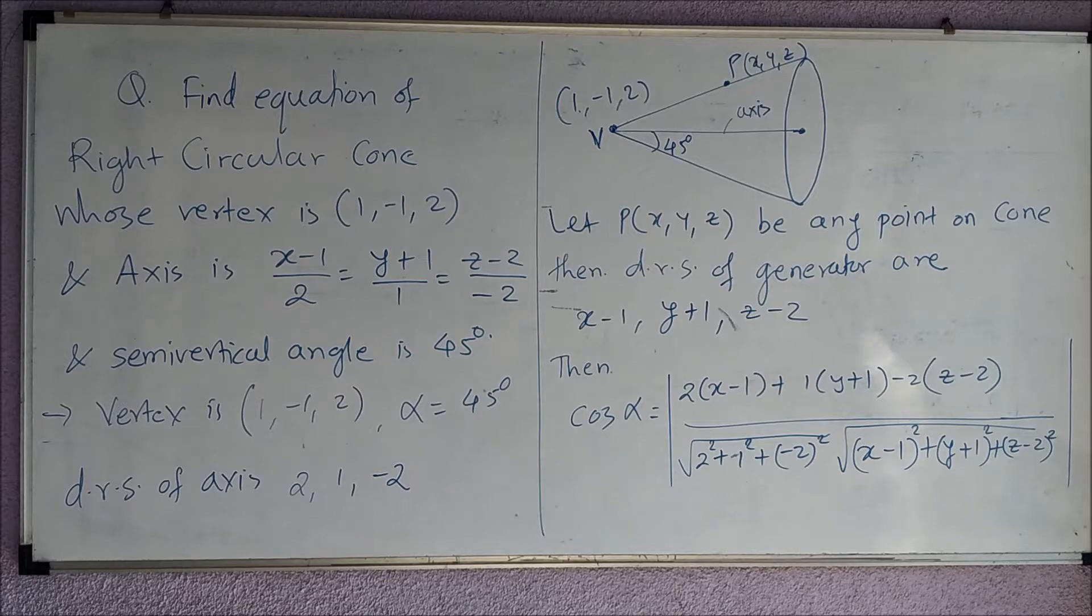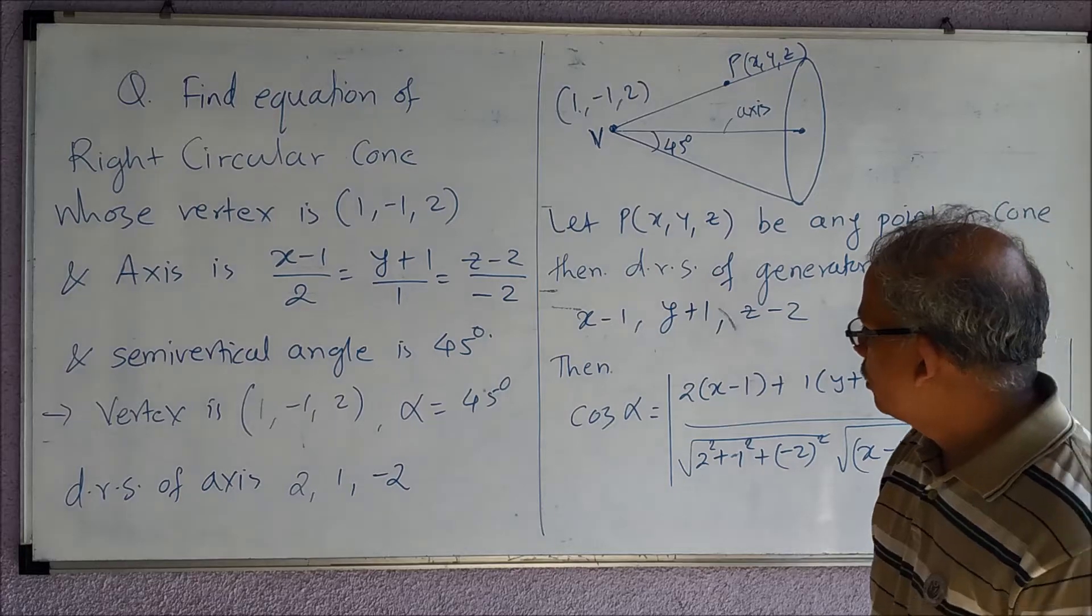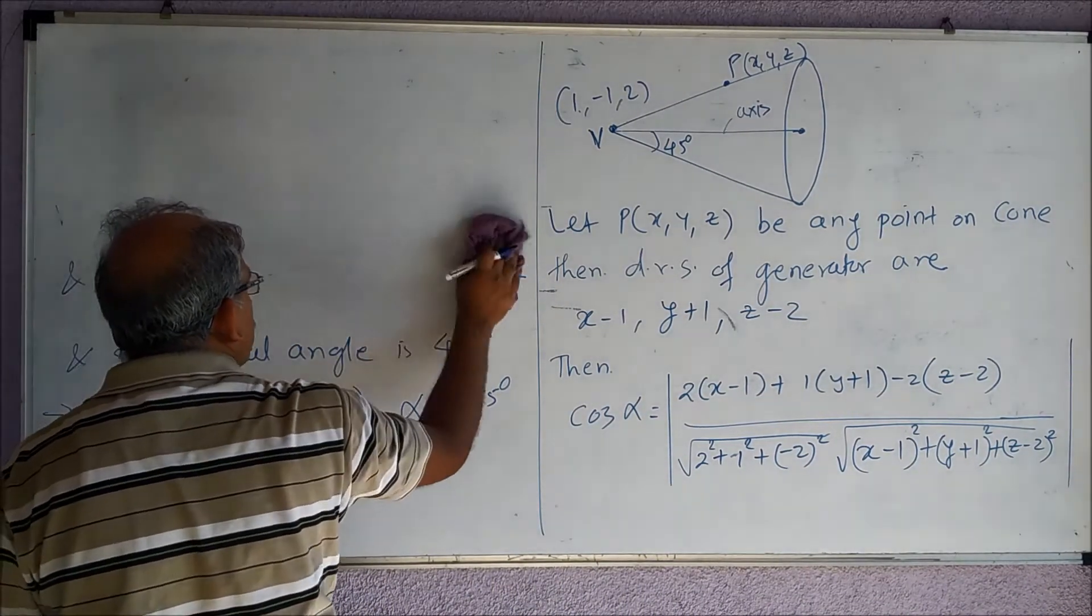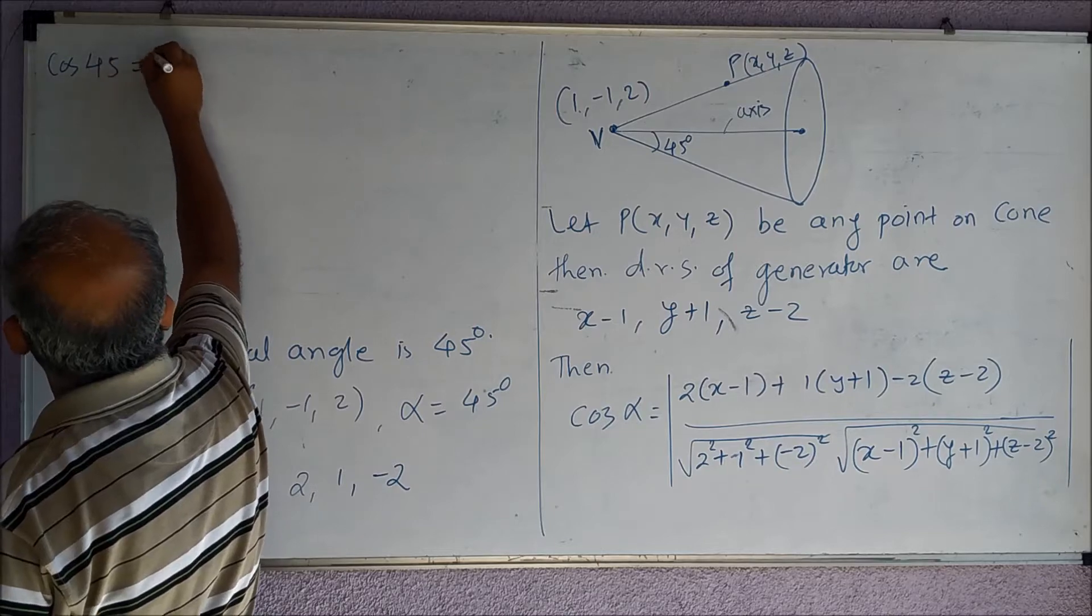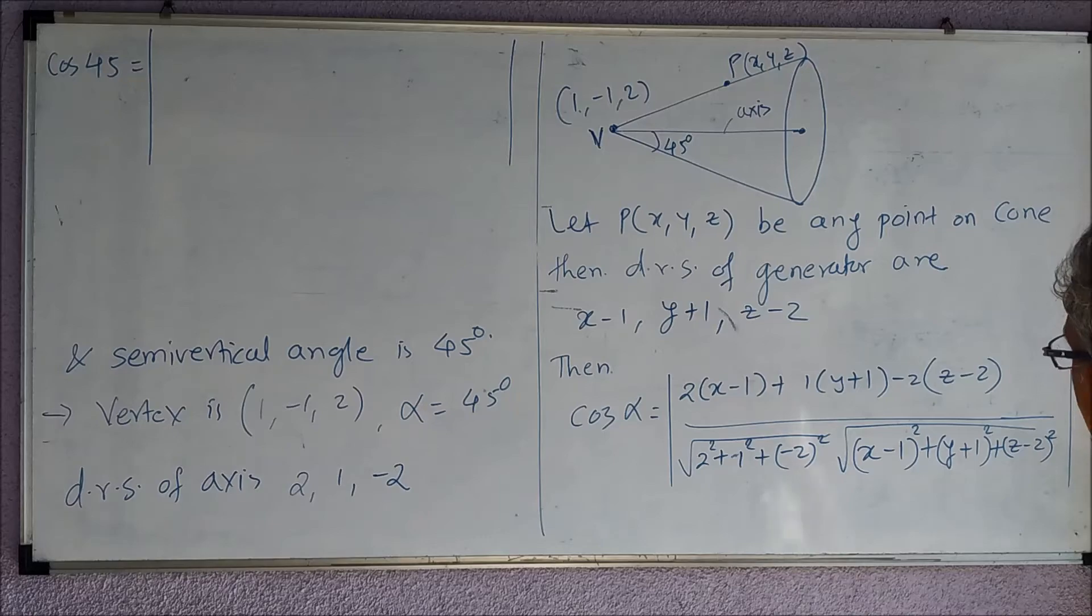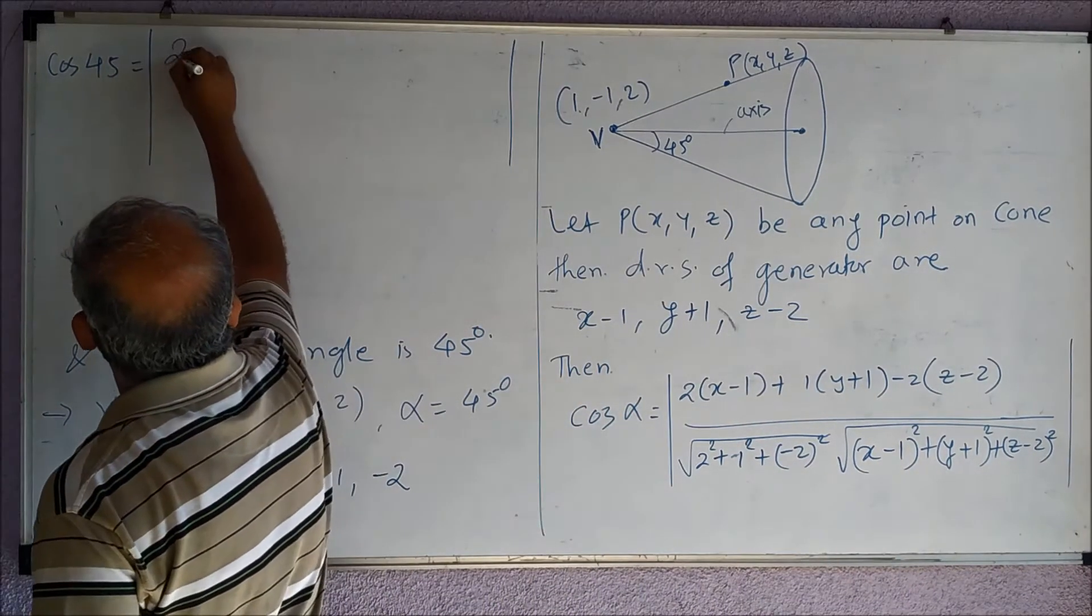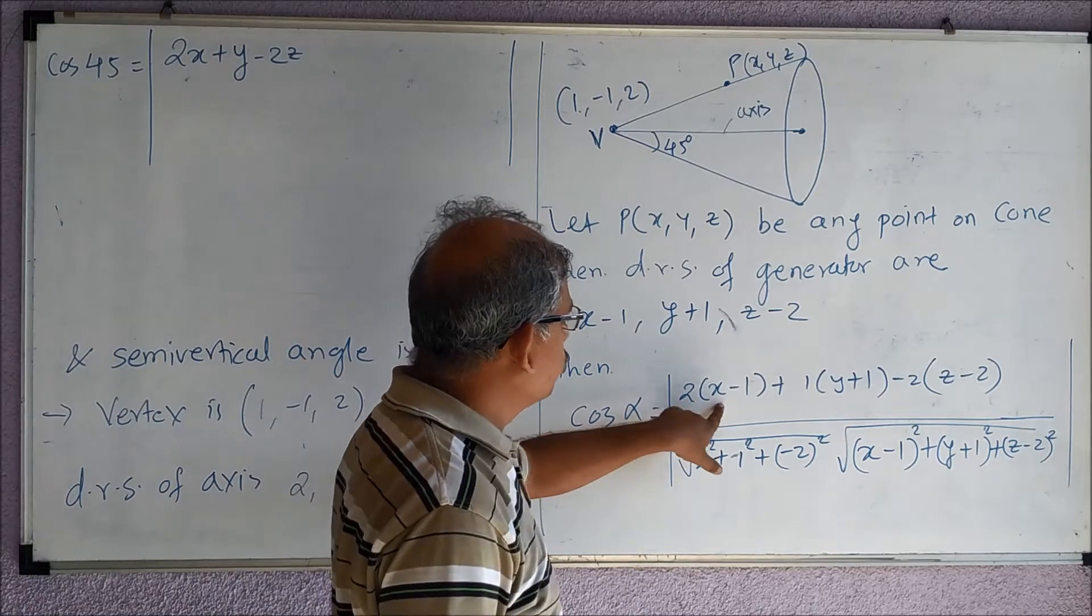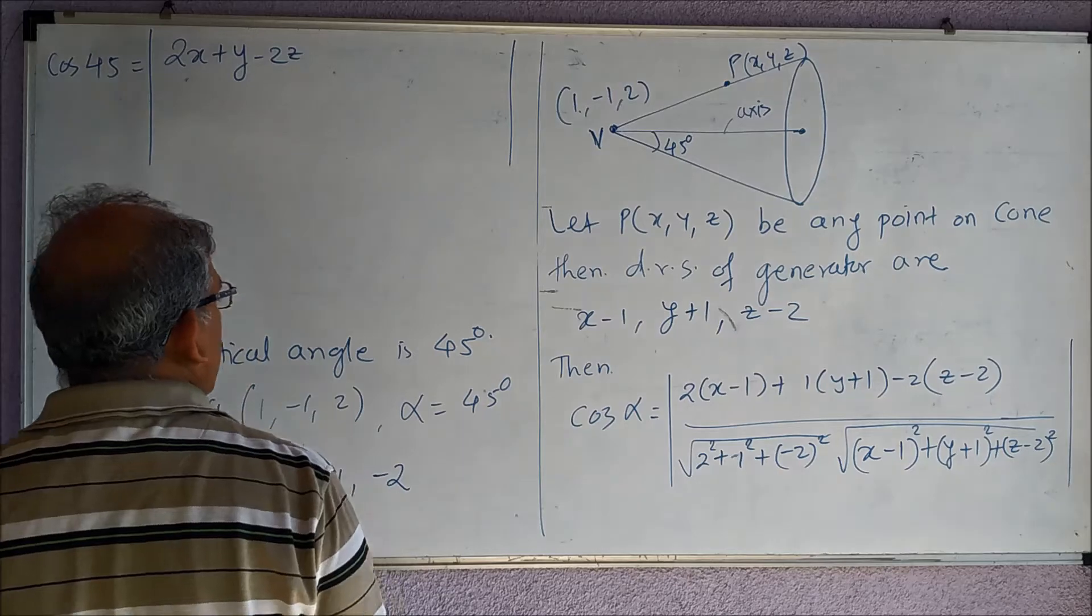And we know the alpha as well, it is cos(45°). So we can now solve this both sides and we'll obtain the equation of the cone. I will say cos(45°) is equal to, inside the modulus, if I simplify the numerator what I get is 2x + y - 2z.